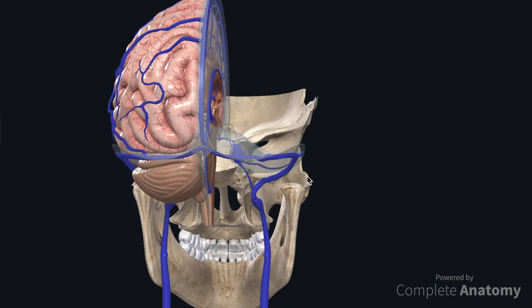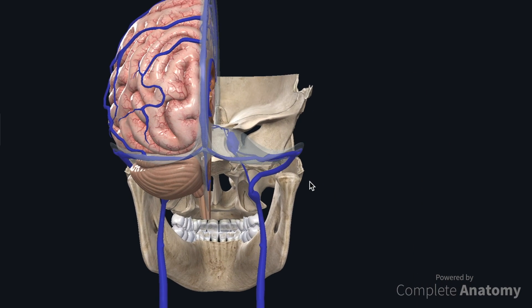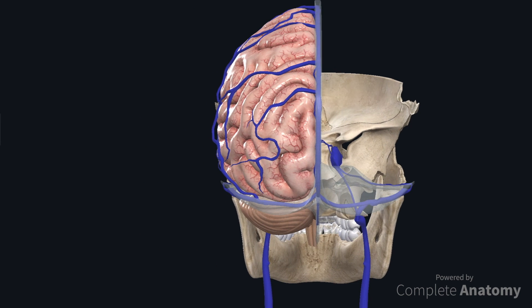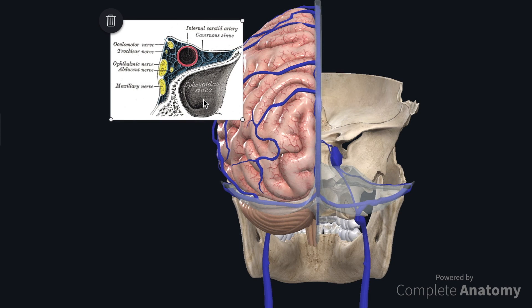There are a few clinical considerations to discuss. Some cranial nerves pass through the cavernous sinus. So in cases of infection, whether coming from the eyes, nose, mouth or ears, a thrombus can form in the cavernous sinus. The consequence is that this clot has the potential to compress the cranial nerves that pass through the cavernous sinus, leading to cranial nerve palsy.